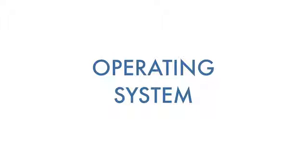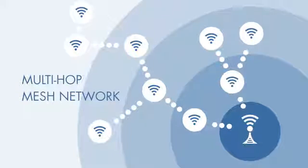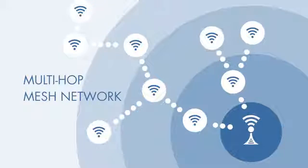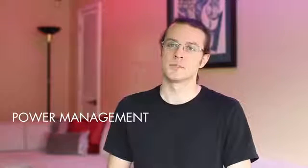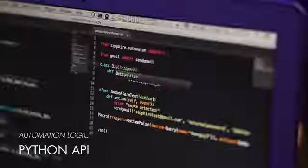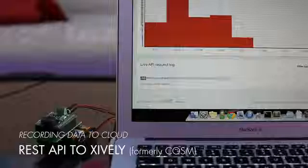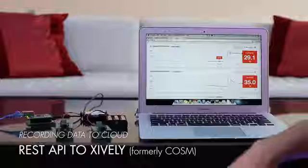The Sapphire operating system runs on the microcontroller and creates a wireless mesh network with other Sapphire devices. It also implements many time-saving features such as power management, IO libraries, and time synchronization. Our server runs on your local network and provides communication to Sapphire hardware via Python and REST APIs. From there, it's easy to write automation logic, record data, and access cloud services.